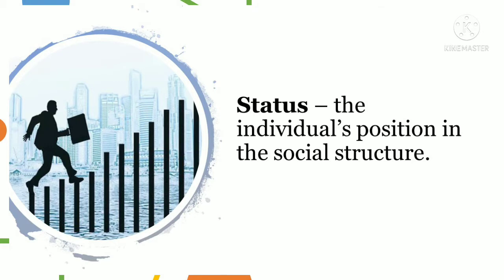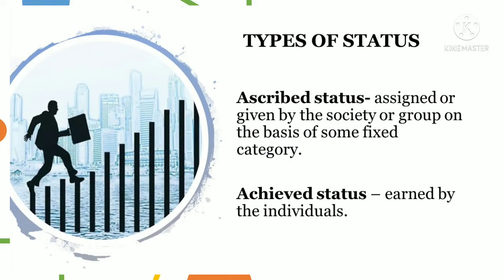Status is the individual's position in the social structure or hierarchy. It is an individual's standing in relation to other people's standing in society. There are two types of status. First, ascribed status — a status that is assigned or given by society or a group on the basis of some fixed category. For example, if you are born with a female reproductive organ, then you are designated as a daughter. You did not choose this status but it is given to you. Achieved status, on the other hand, is something that you earned and strived for — you choose and work hard for this status, for example, being a world-class athlete, a medical doctor, or a college professor.